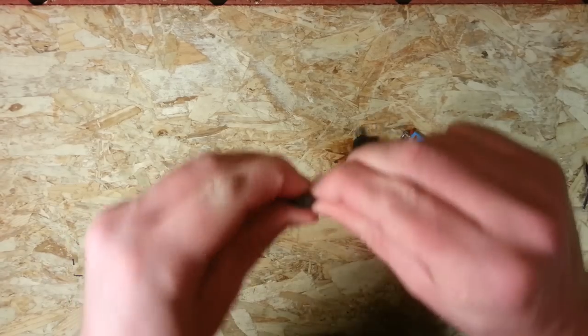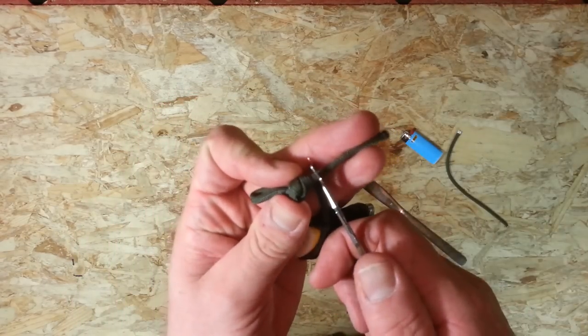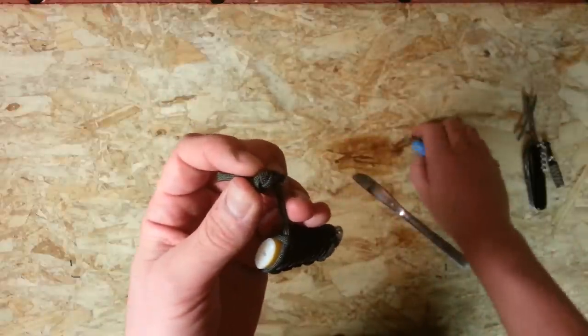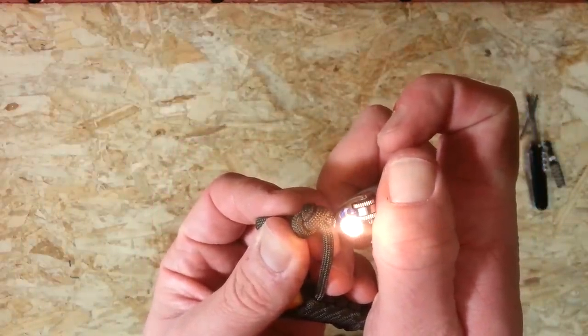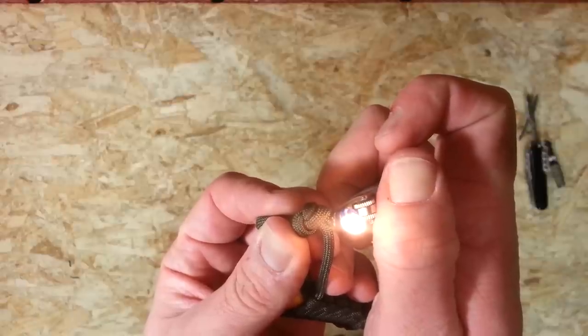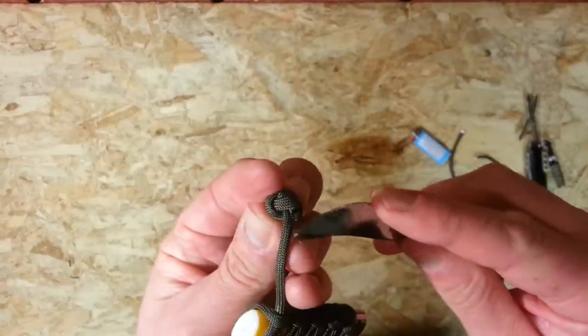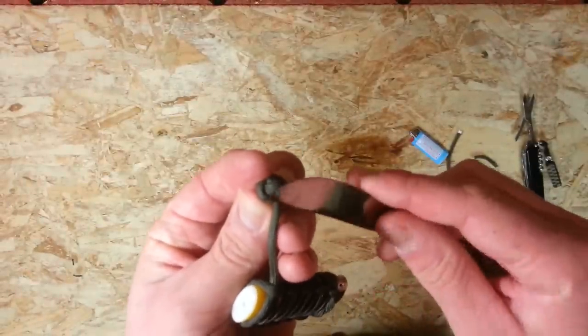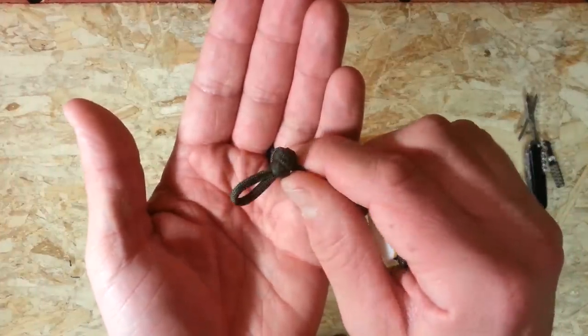That should be sufficiently large. So again we're just going to snip off the excess there. Lighter and singe this end. Make sure you singe it until it starts bubbling up because that's when you're going to have enough of the actual melted paracord material to actually form and seal that knot there. So there we have just a basic knot in there.